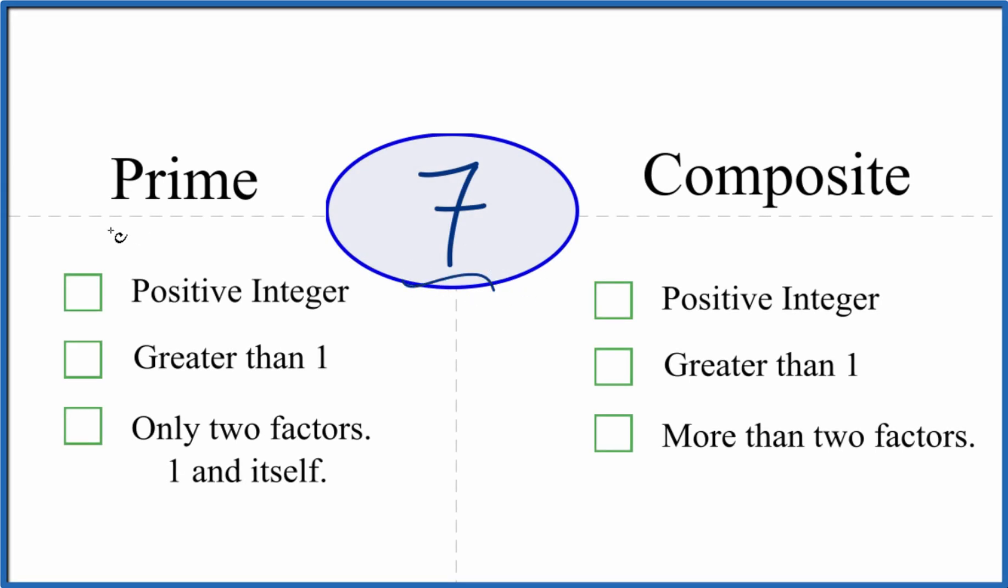Let's determine whether 7 is a prime number or a composite number. Here's how you do it.